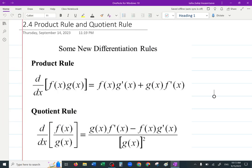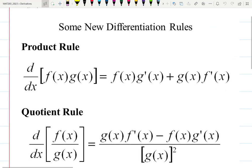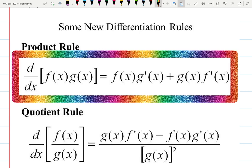Product rule and quotient rule. Here are the formulas. The formula says d over dx — the derivative of f times g, that's a product, and that's why it's called the product rule. You want to differentiate the product.